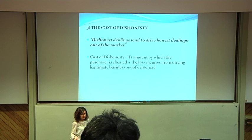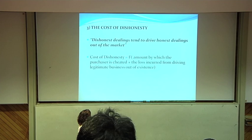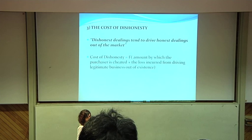The cost of dishonesty is an implication of the lemons model, where Akerlof quotes that dishonest dealings tend to drive honest dealings out of the market. The cost of dishonesty is a function of the amount by which the purchaser is cheated plus the loss incurred from driving legitimate business out of existence.